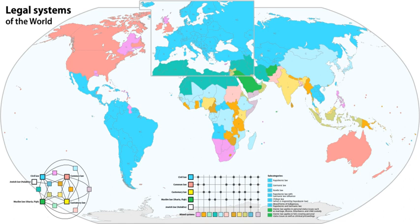The United States federal courts are divided into twelve regional circuits, each with a circuit court of appeals, plus a thirteenth — the Court of Appeals for the Federal Circuit — which hears appeals in patent cases and cases against the federal government, without geographic limitation. Decisions of one circuit court are binding on the district courts within the circuit and on the circuit court itself, but are only persuasive authority on sister circuits. District court decisions are not binding precedent at all, only persuasive.